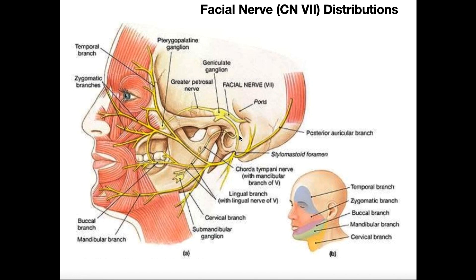You can see this pretty well here — the facial nerve proper descends through the cranium and exits through the stylomastoid foramen. Very quickly it bifurcates into two branches: one branch goes posterior, which is the posterior auricular nerve, and then there's a larger branch that goes anterior, which is really the focus of this video.